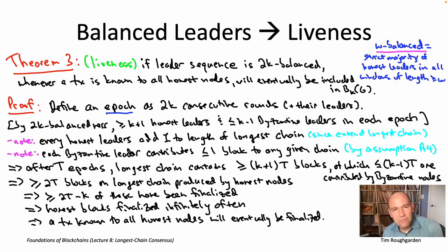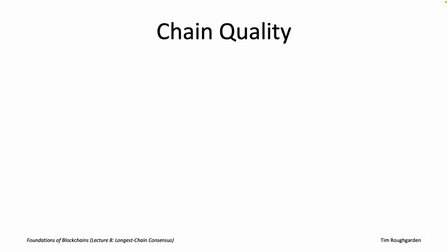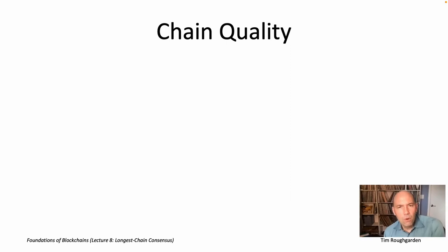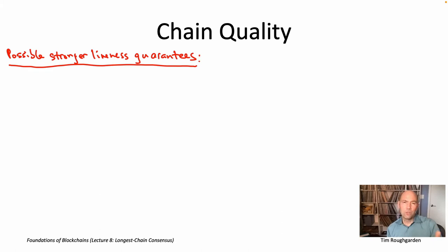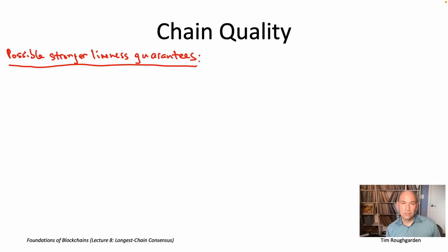That completes the proof of liveness for longest chain consensus, again under the assumption that the leader sequence is balanced. I want to say a little more about liveness — specifically about potential strengthenings of the liveness statement we just proved — and to tell you about a measure known as chain quality, which plays a pretty central role in the academic literature analyzing longest chain consensus.